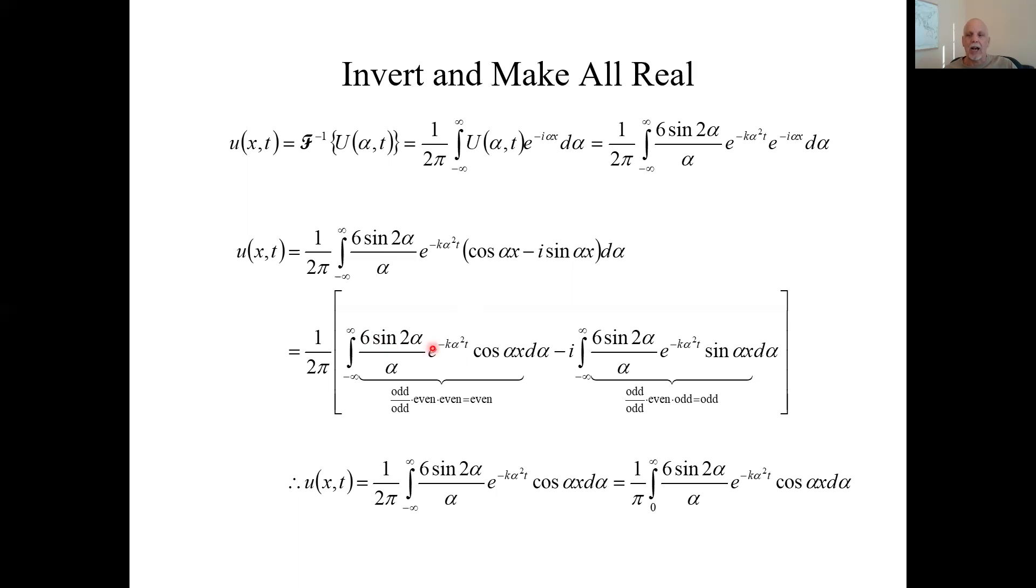Now sine is an odd function, and it's with respect to whatever the variable of integration is, which is alpha d alpha. So are things odd or even with respect to alpha? Sine of something alpha is odd. Alpha is alpha to the first power, odd power. That's odd as well. Odd divided by odd, this has an alpha squared so it's even. Cosine of something alpha. So I have all evens times evens. It's ultimately an even.